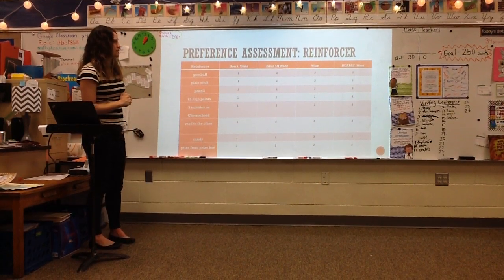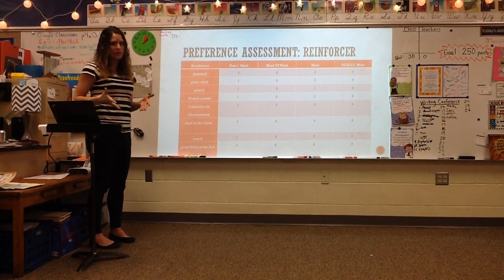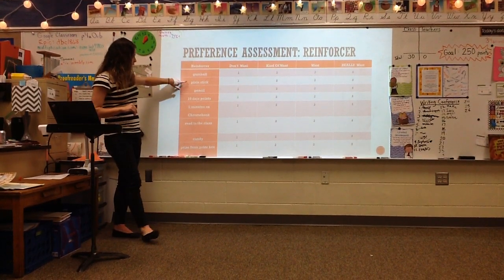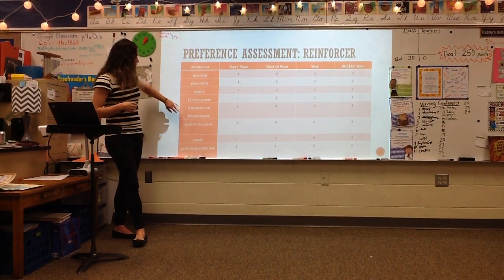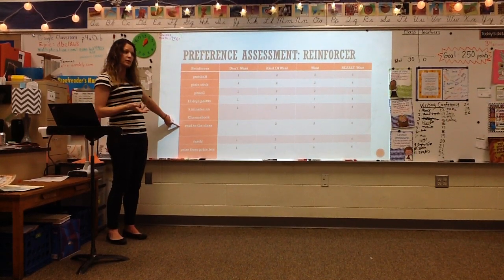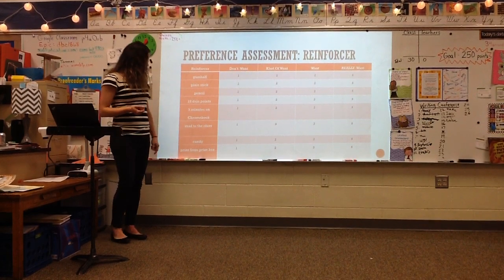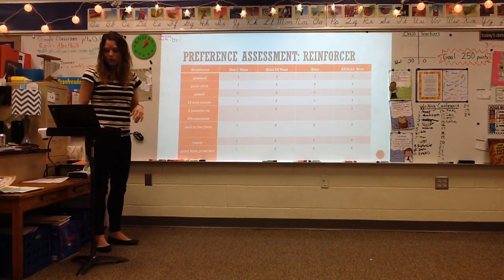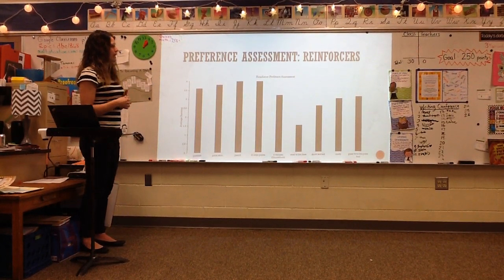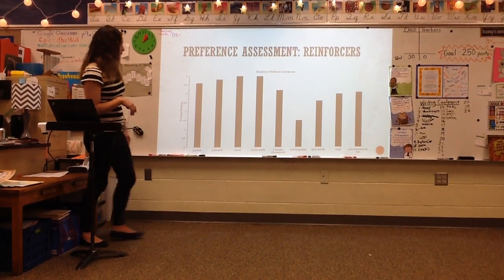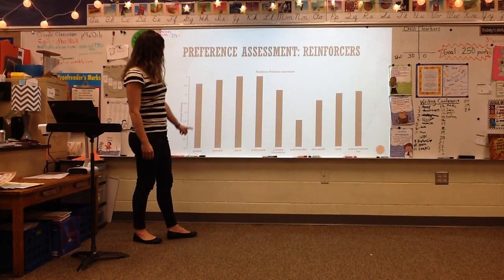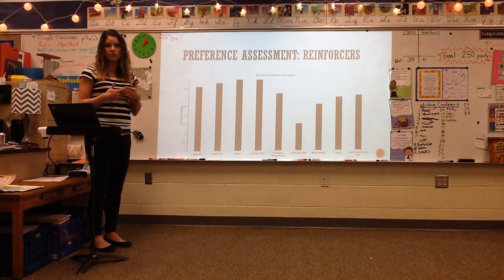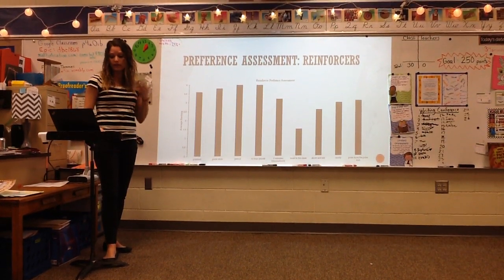Prior to doing the study, I would also do a preference assessment on reinforcers. We already have a token economy within the classroom, and looking at some items from it: gumballs, pixie sticks, pencil, 10 dojo points towards our classroom economy, 5 minutes of free time on the Chromebook, having the opportunity to read to the class, a candy from the candy box or a prize from a prize box. Using a Likert scale from 1 to 4 — 1 being I don't want that and 4 being I really want that — I anticipate the top reinforcers being 10 dojo points, a pencil, a pixie stick, a gumball, and 5 minutes on the Chromebook. Those 5 top reinforcers would be the reinforcers put into the array for the terminal link in the choice condition.